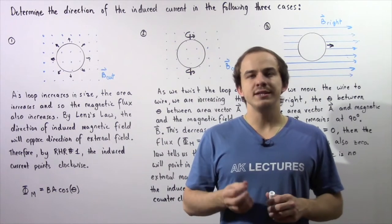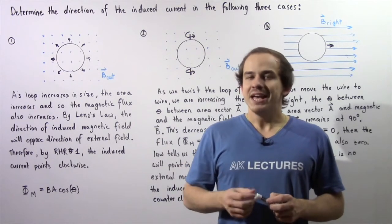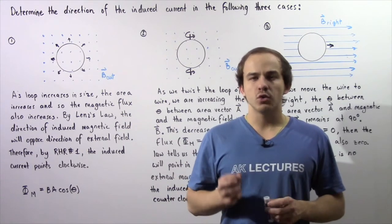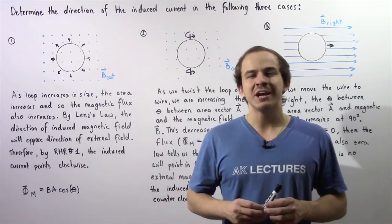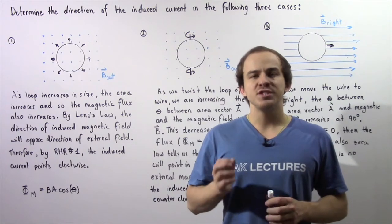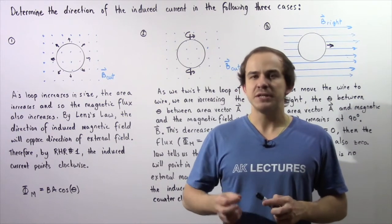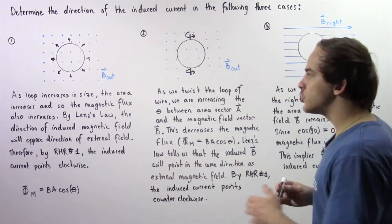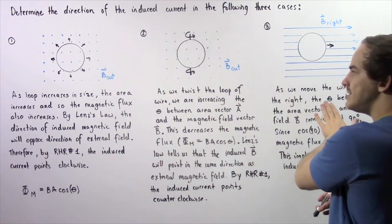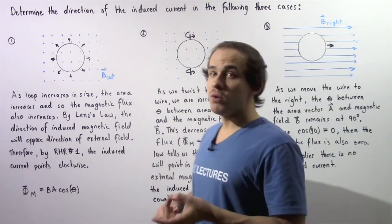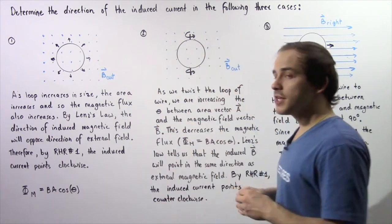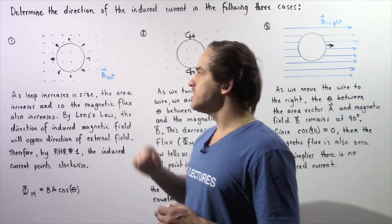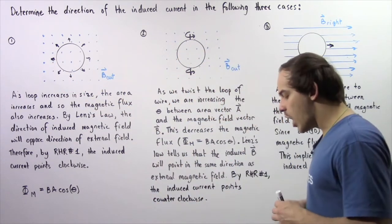In the previous two lectures, we discussed Lenz's Law. Lenz's Law basically allows us to determine the direction of our induced electric current that is produced as a result of a changing magnetic flux. So in this lecture, we're going to look at the following three cases in which we're going to apply Lenz's Law to determine the direction of our induced electric current.